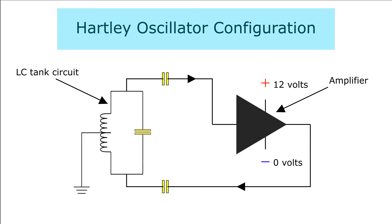A Hartley oscillator is an electronic LC oscillator that consists of an amplifier and a feedback circuit whose frequency is determined by the LC tank circuit. It is also called the split inductance oscillator. This circuit was invented by Ralph Hartley in 1915.